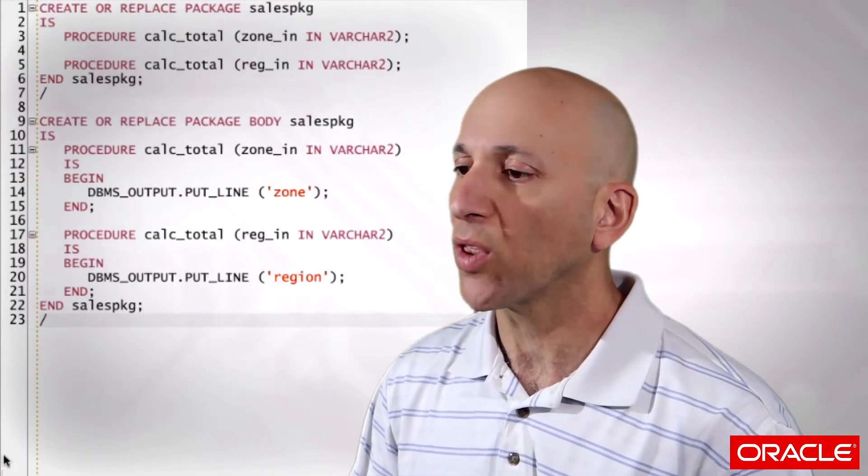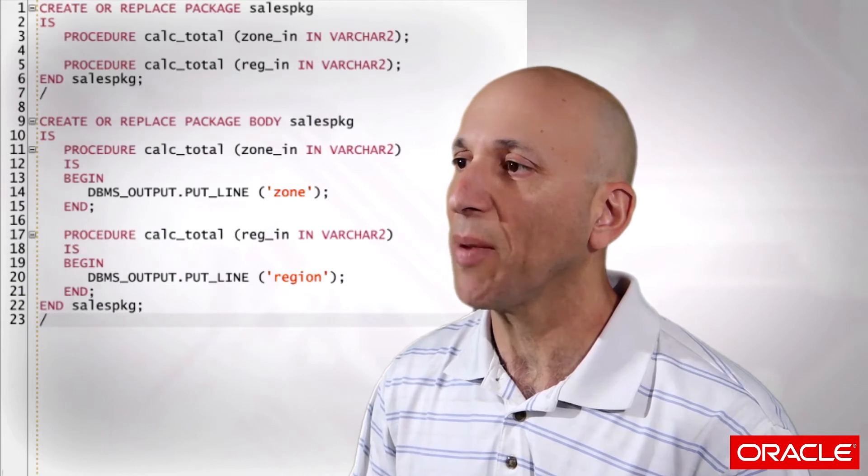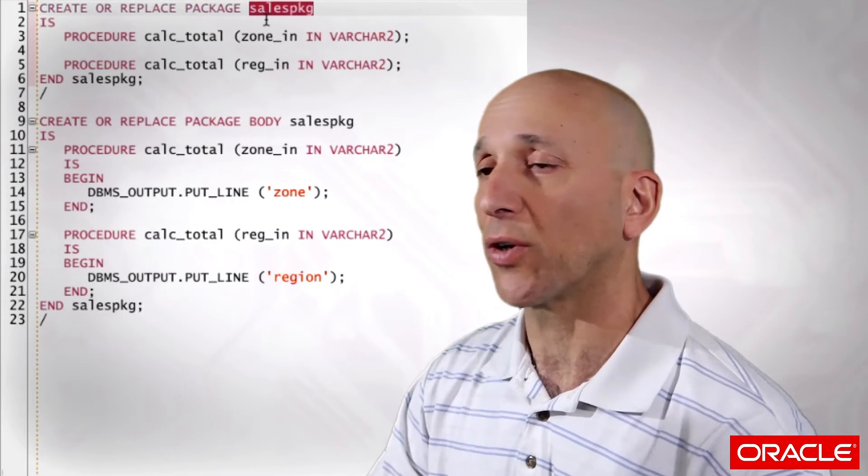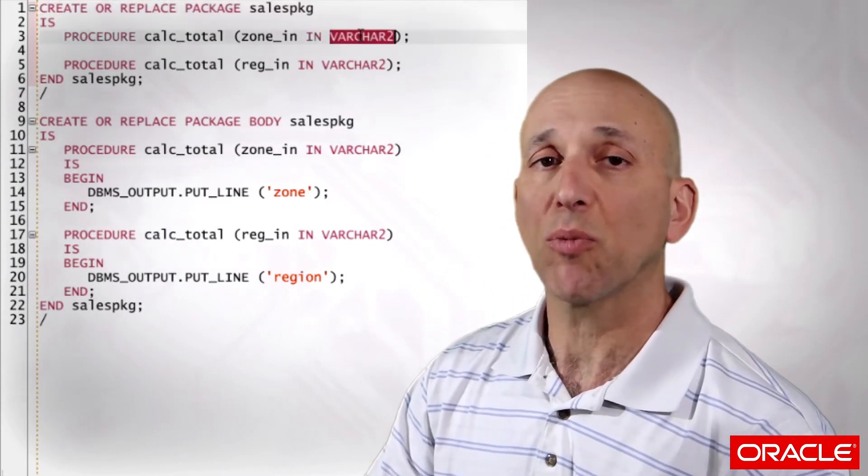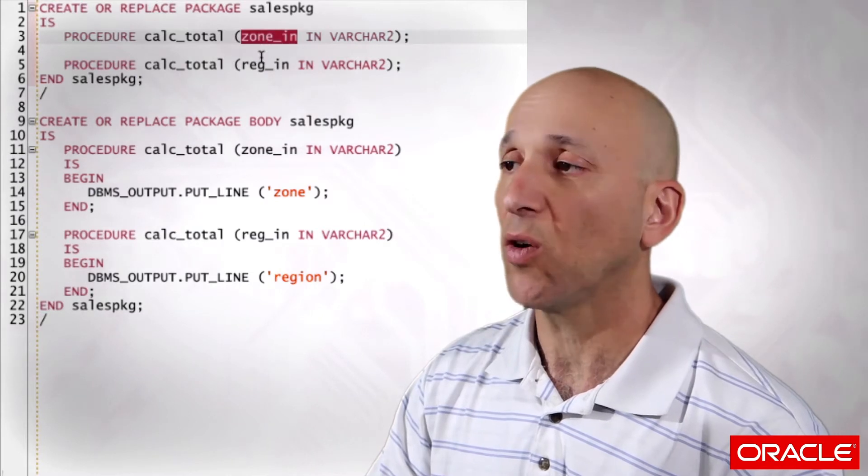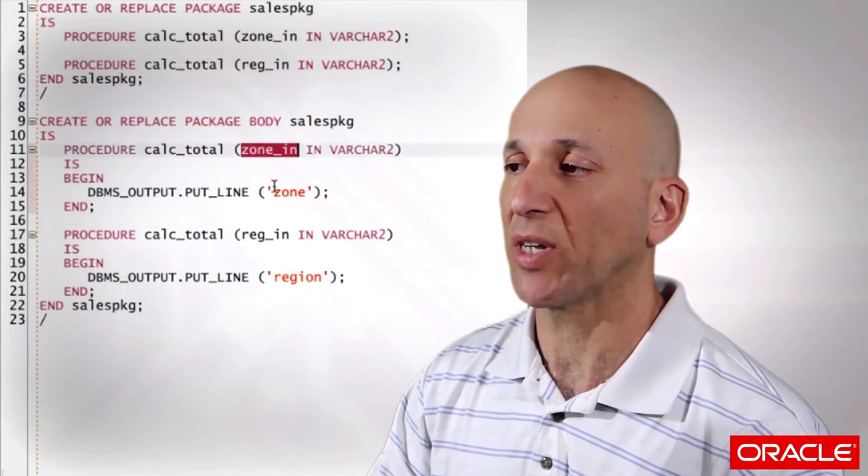Overloading is a situation where you can have more than one subprogram with the same name. Here we go. I've got a sales package, two procedures named calc_total. Each of them take a single parameter of type string, one of them has a parameter named zone_in, one region_in. The zone version displays zone, the region version displays region.